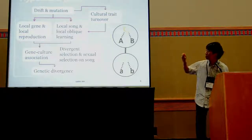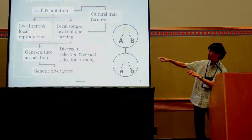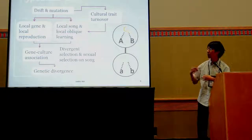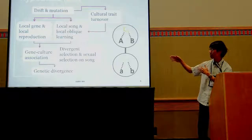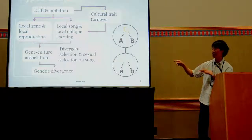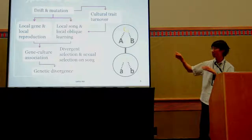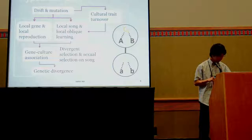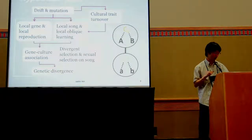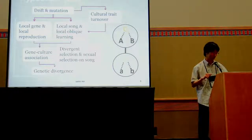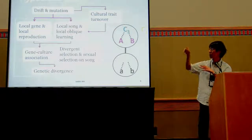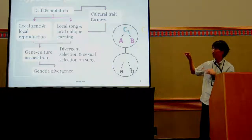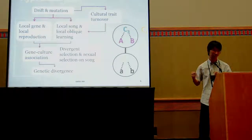I notice I missed something: when there is increased genetic divergence, it feeds back to mean there are more local genes. And even though sexual selection does not affect the cultural trait directly, divergent selection can still affect it, leading to more local cultural traits. The second part of my hypothesis is that drift and mutation will both directly and indirectly increase local genes and local cultural traits — both through drift and through cultural trait turnover — leading to more gene-culture association and as a result more genetic divergence. For the cultural trait turnover, I'm specifically looking at whether a third cultural trait can come in, replace the original cultural trait in one patch, while still maintaining the gene-culture association.